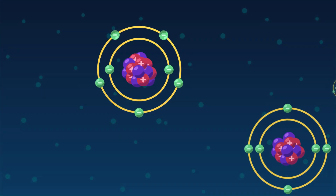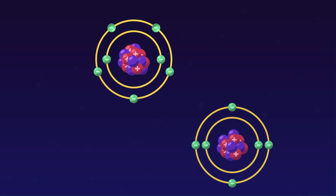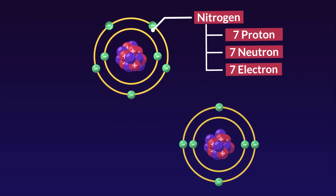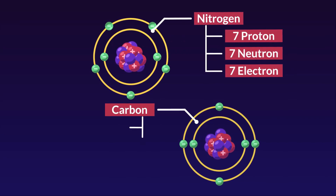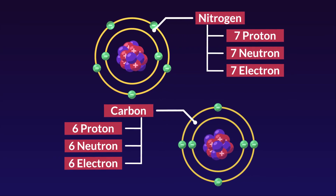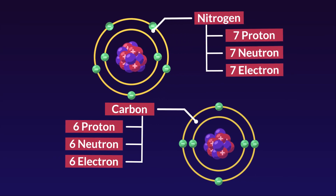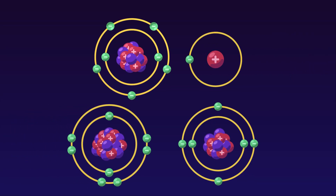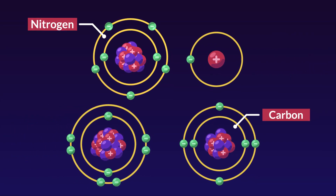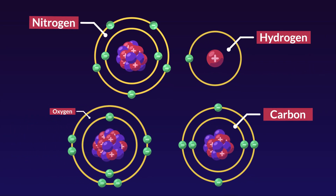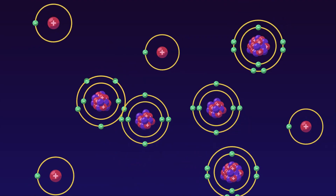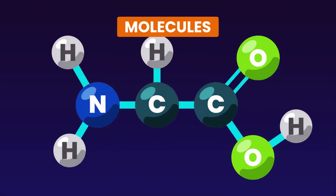These subatomic particles allow us to distinguish between elements. For example, there is one more proton in nitrogen than in carbon, as well as more neutrons and electrons. Living beings primarily consist of the elements nitrogen, carbon, hydrogen, and oxygen, which bond together to form structures called molecules.